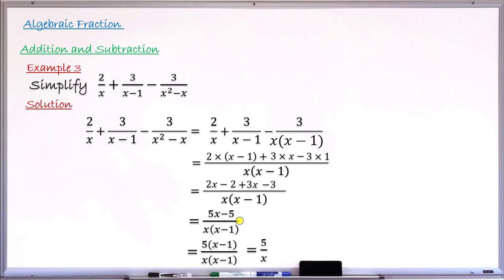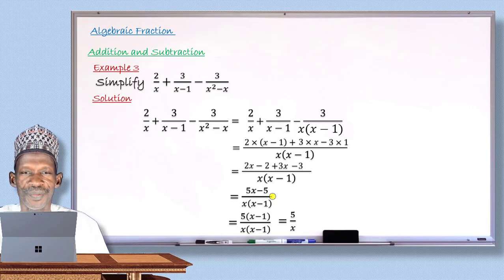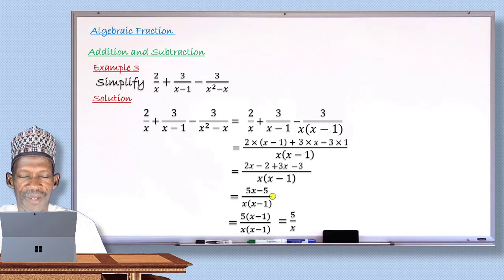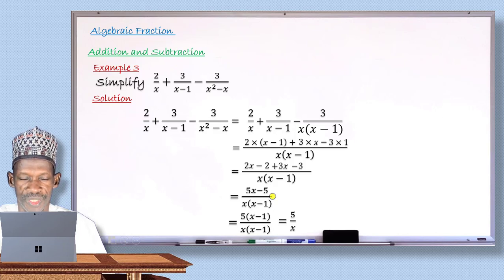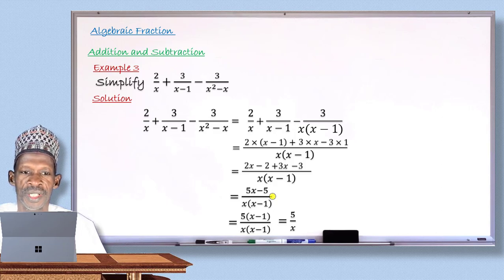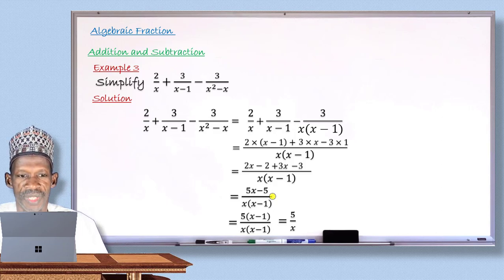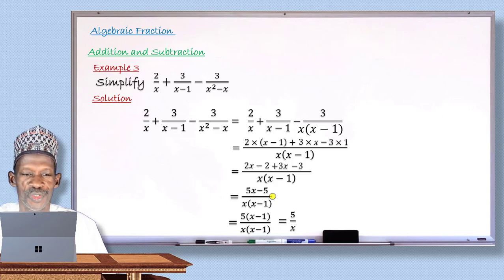This is how we add and subtract algebraic fractions. With that, my dear student, I have come to the end of this lesson. I hope that with the examples given, you will be able to perform addition and subtraction of two algebraic fractions. Thank you for your attention. Let me now move to the last segment — Math is Fun — and explain what is interesting about the number 62.